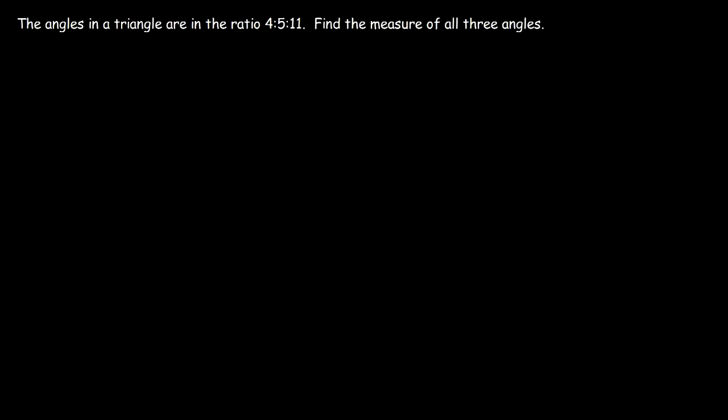Let's try a word problem. The angles in a triangle are in a ratio 4 to 5 to 11. Find the measure of all three angles. So let's say this is angle A, B, and C. So one of the angles has to be 4x, the other has to be 5x, and another has to be 11x. Because they're in a ratio 4 to 5 to 11. And now all we got to do is find the values of A, B, and C.